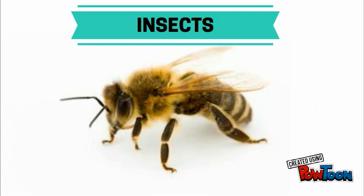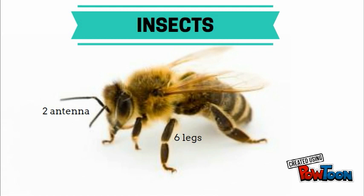Let's review. All insects have three body parts — they have a head, thorax, and abdomen. All insects also have six legs and two antennas. Don't forget that most insects have two or four wings also.